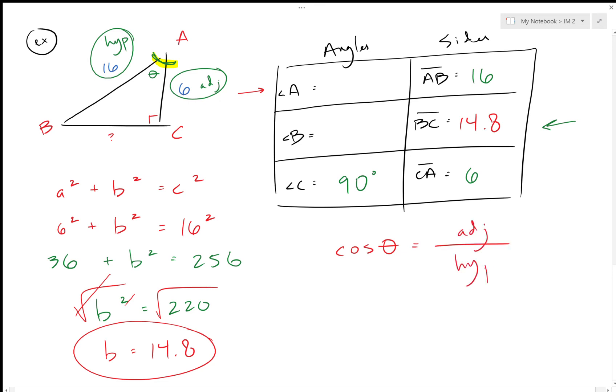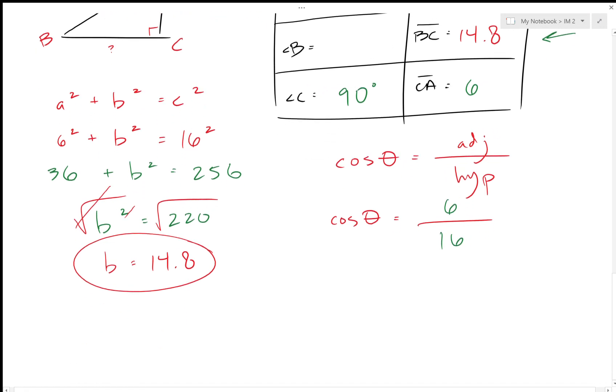So cosine of theta is the adjacent over the hypotenuse. So cosine theta, I don't know what theta is, so that's what I'm solving for. The adjacent is 6, the hypotenuse is 16. Just looking at this, 6 over 16, we'll take to a calculator, we get 0.375.